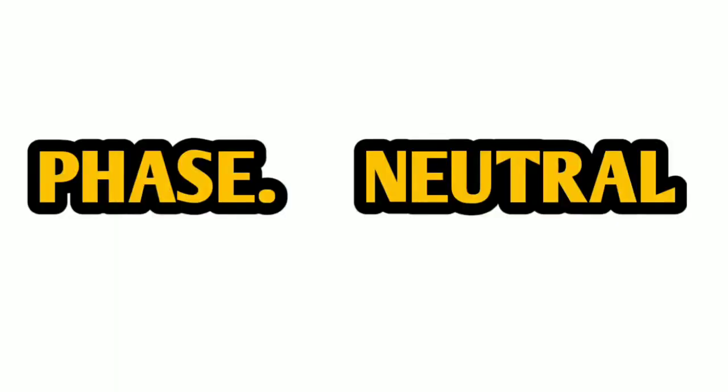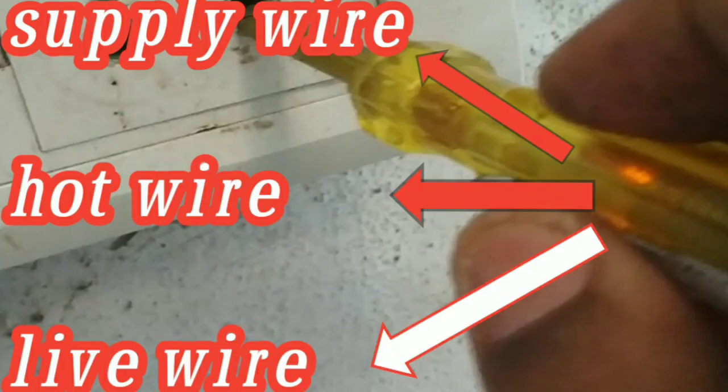So, today I will tell you about phase and neutral. In the first chapter, phase is a direct supply wire. It is a live wire or a hot wire.